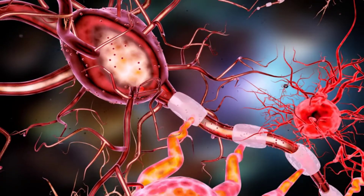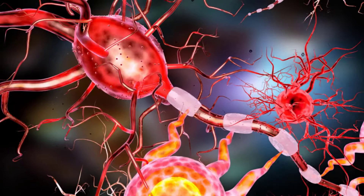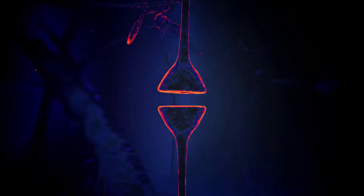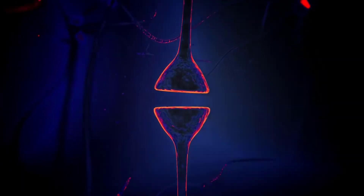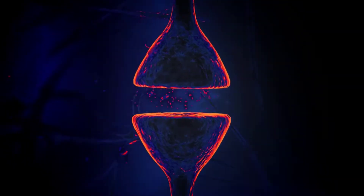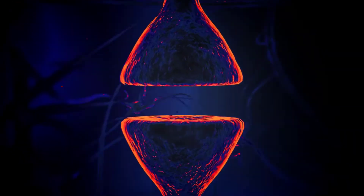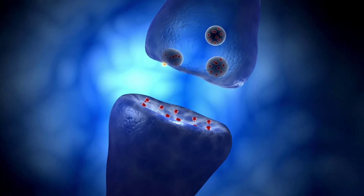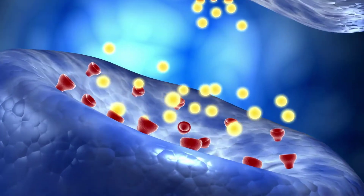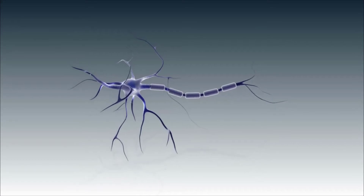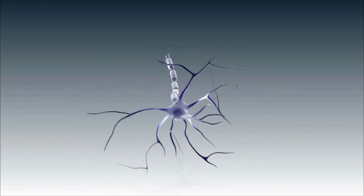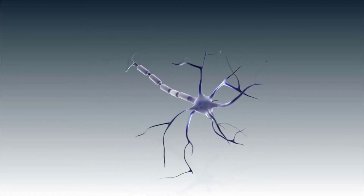Two main classes of cells make up nervous tissue: the neuron and the neuroglia. Neurons propagate information via electrochemical impulses called action potentials. Action potentials are biochemically linked to the release of chemical signals. There are three main parts of a neuron: the cell body, the dendrites, and the axon.